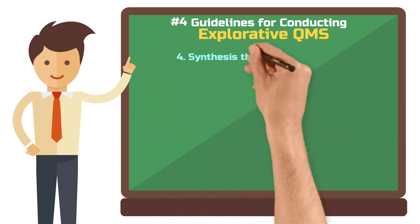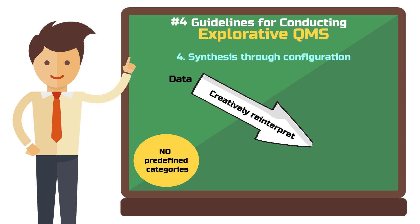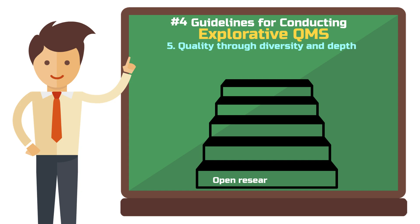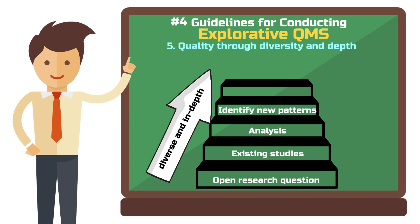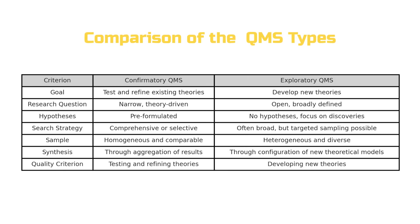Fourth step: reinterpret the data creatively to develop a new theoretical model rather than forcing it into predefined categories. Your goal is to generate fresh insights about the phenomenon by integrating findings from different studies. Fifth step: the success of your exploratory qualitative meta-study depends on the variety and depth of the analyzed cases. The better you identify and articulate new patterns, the stronger your theoretical contribution. Here you can see a comparison of the two types of qualitative meta-studies.